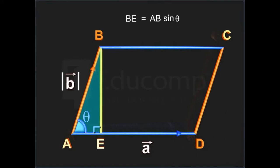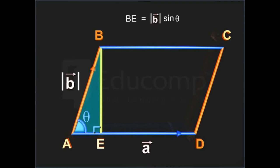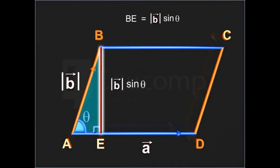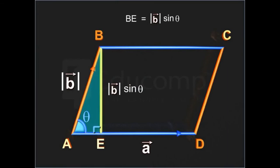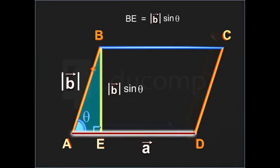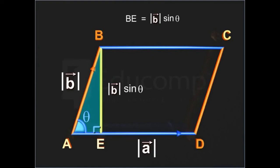Since the length of AB is equal to the magnitude of vector B, BE is equal to the magnitude of vector B into sin theta. Also, the length of AD is equal to the magnitude of vector A.